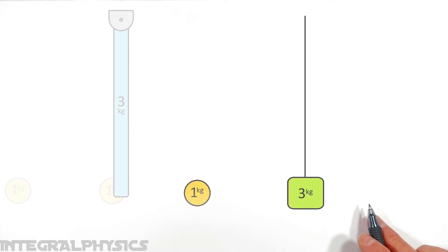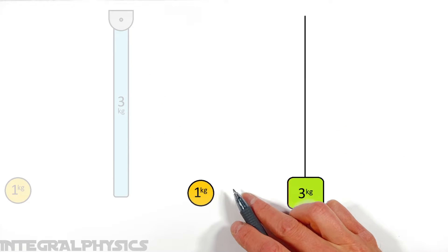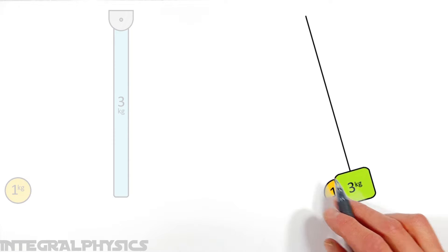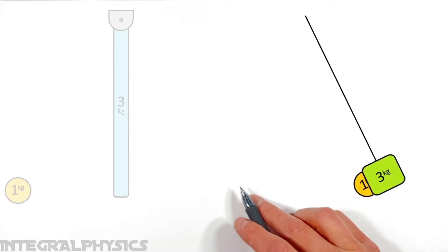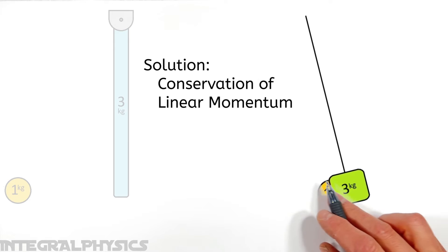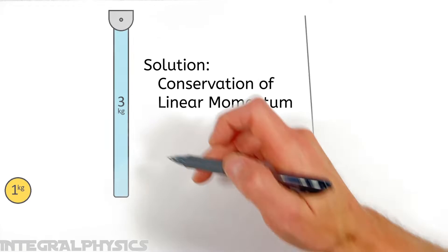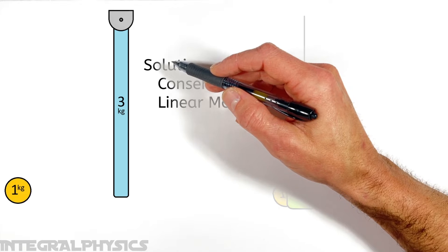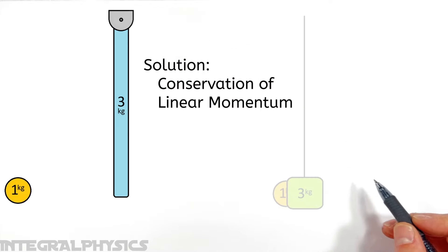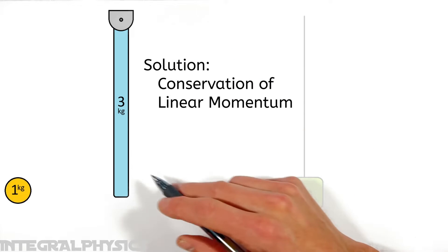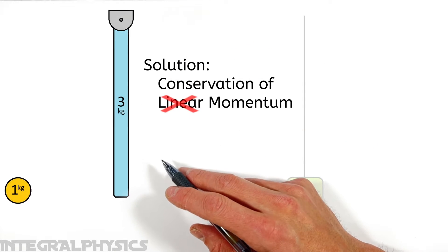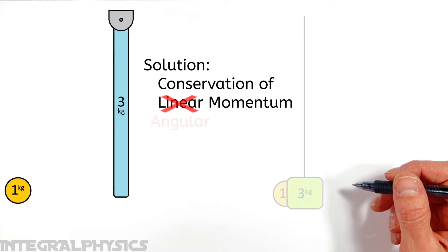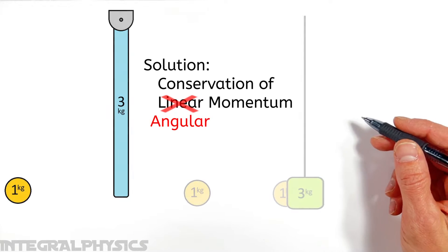You might have seen a similar problem in which a ball strikes the end of a simple pendulum — that's just a block hanging from a string — and the problem is solved using the conservation of linear momentum. But because this problem involves a rod connected to a pivot and not a simple pendulum, the conservation of linear momentum doesn't apply here. Instead, we'll have to turn to something called the conservation of angular momentum.